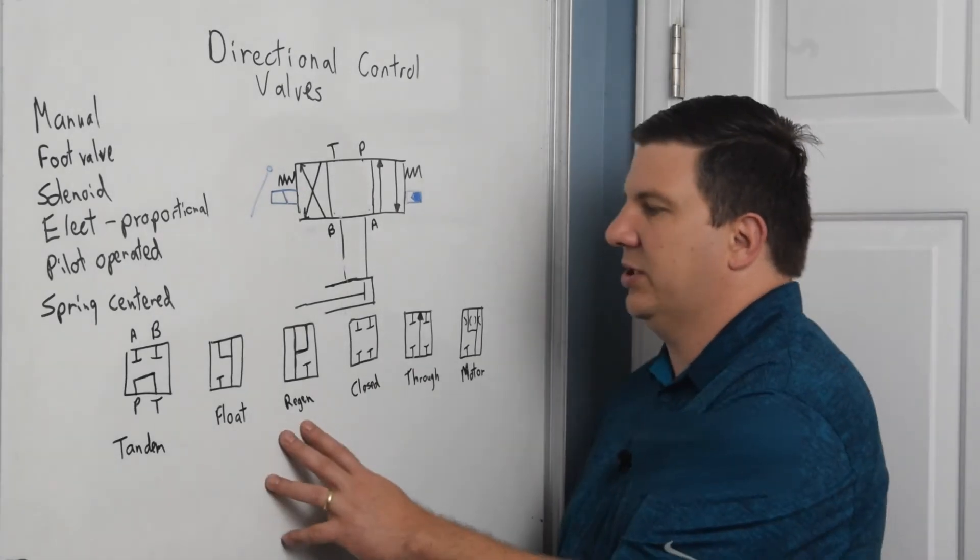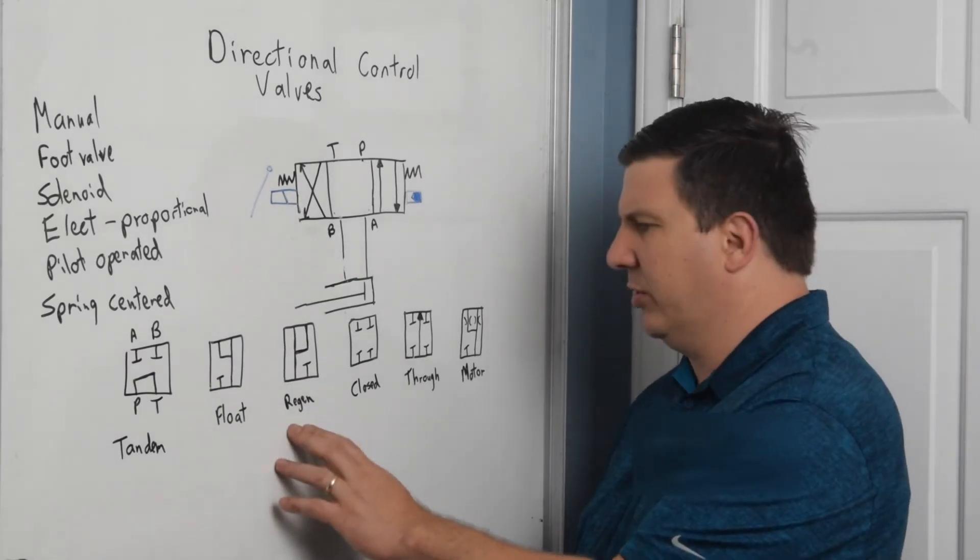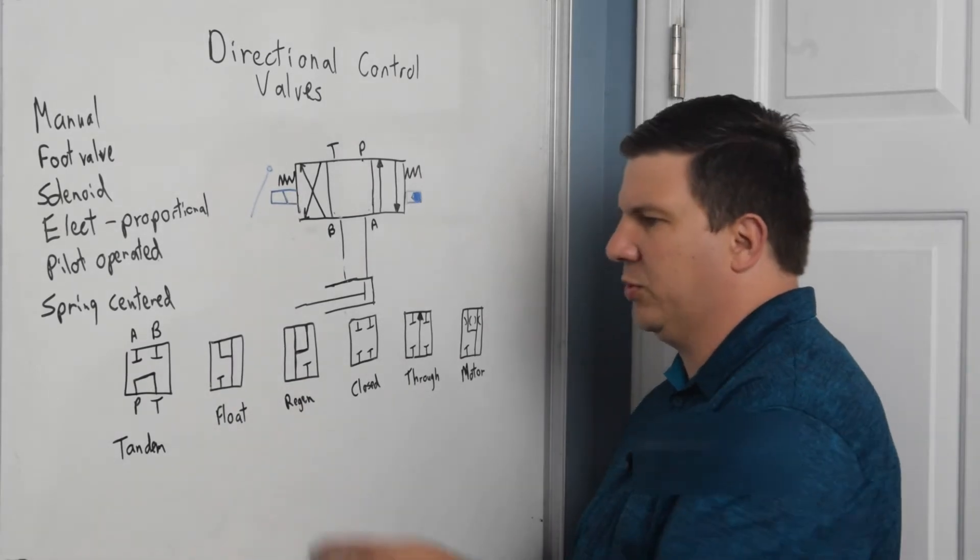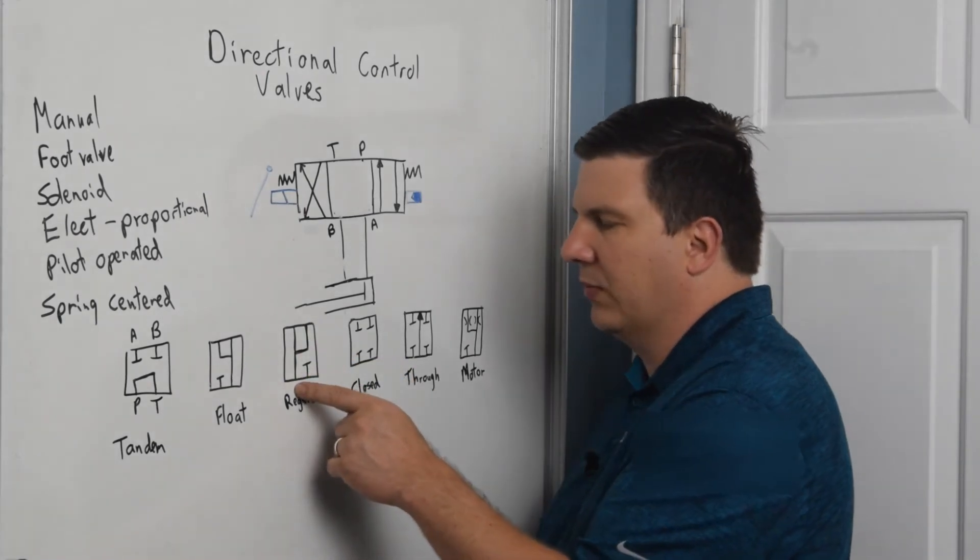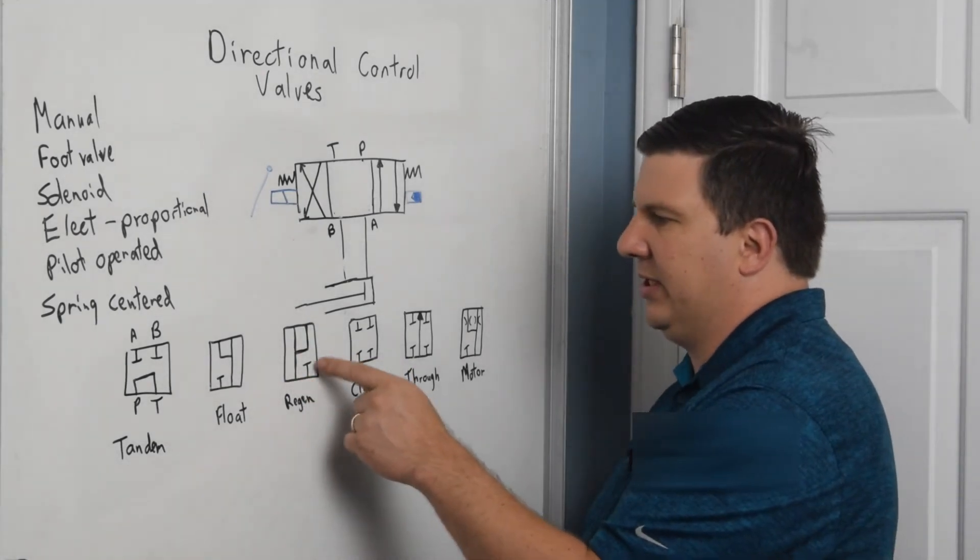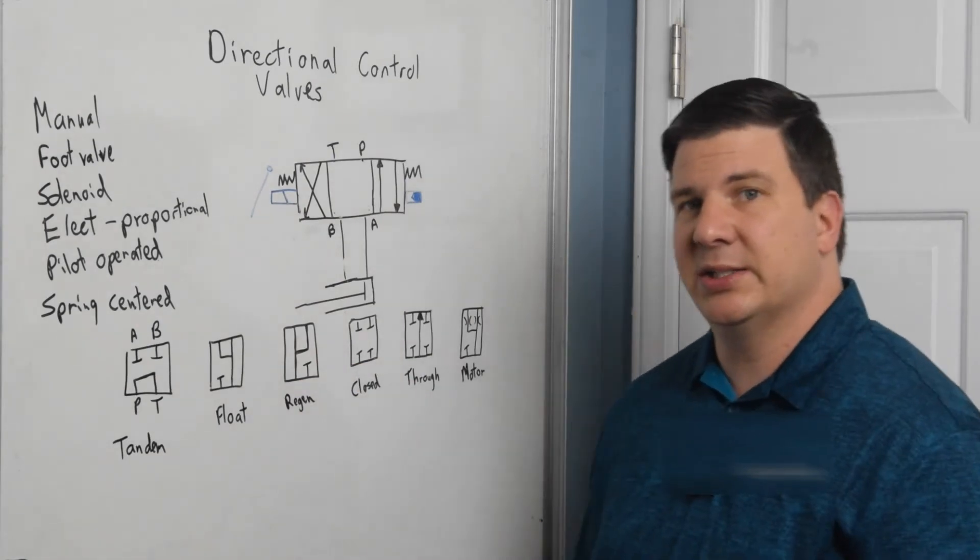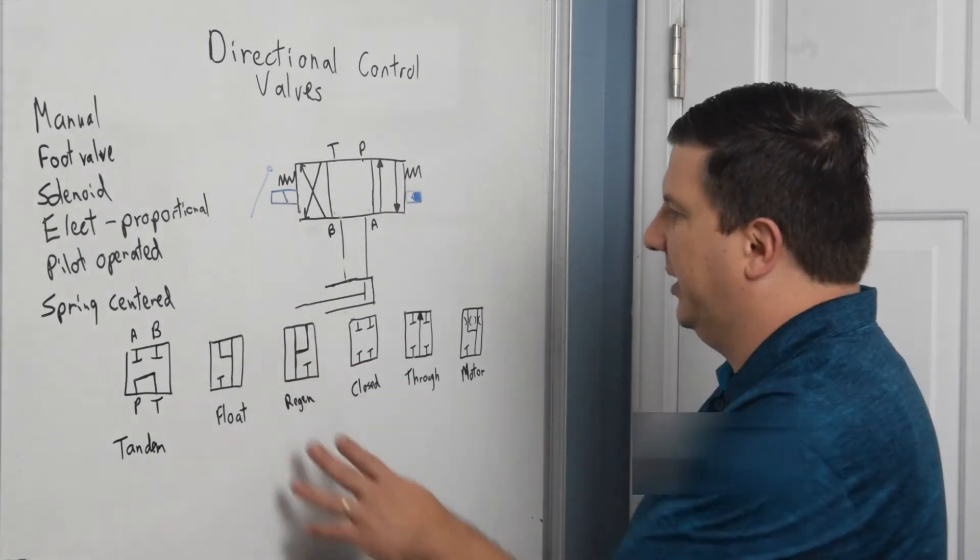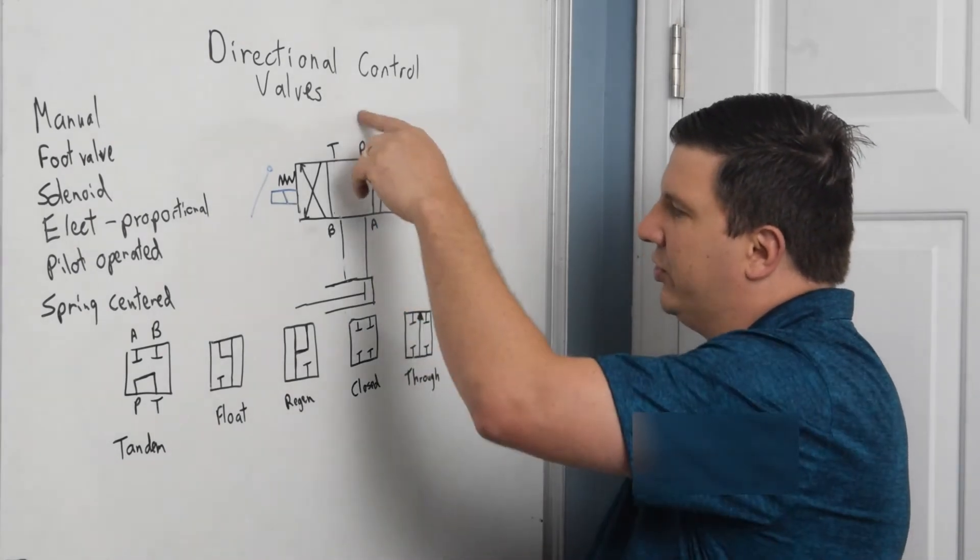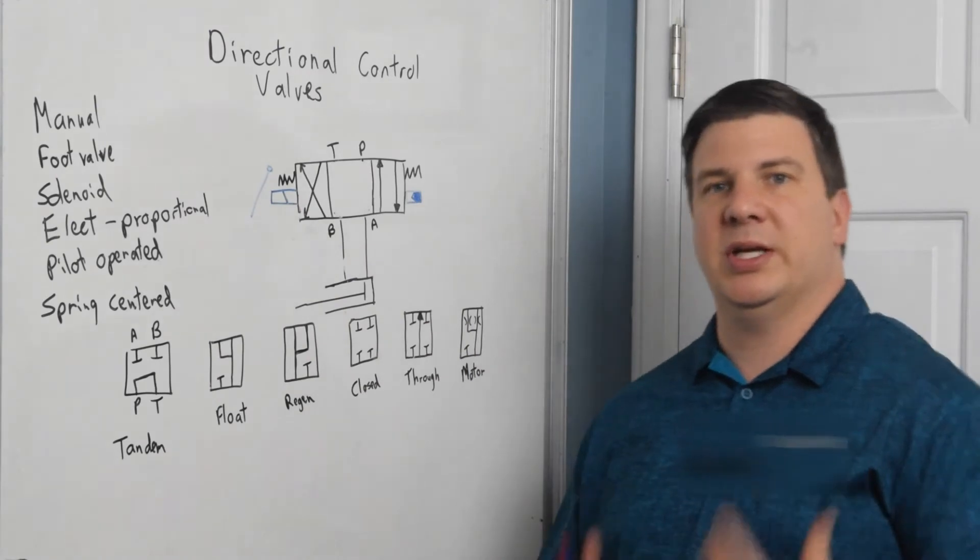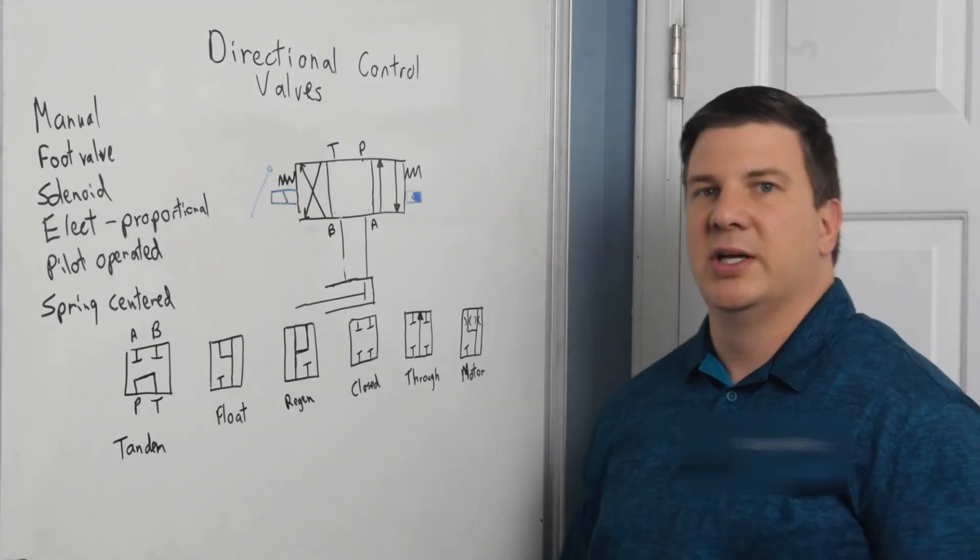So a regen circuit, these are very rarely used. This is the most rare configuration where my P, A and B are tied together and my tank is blocked. So what that does is, if I have this cylinder right here, if I pressurize both the A and the B ports, most people think that nothing happens.